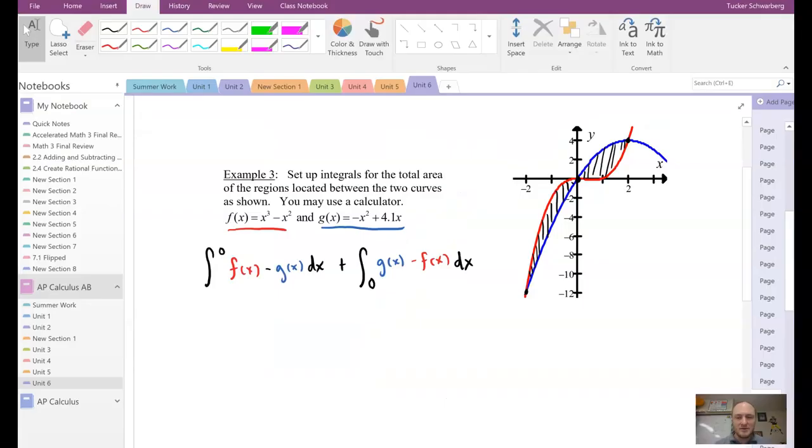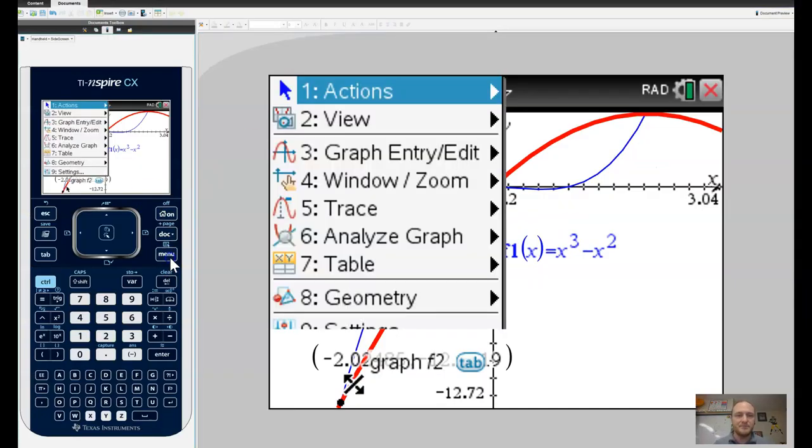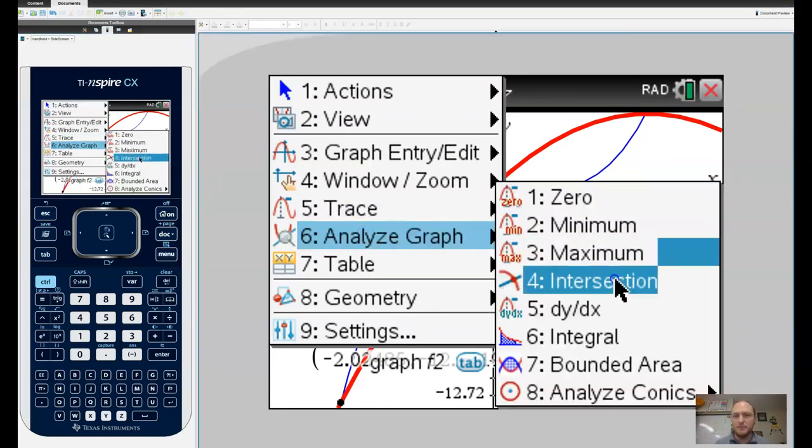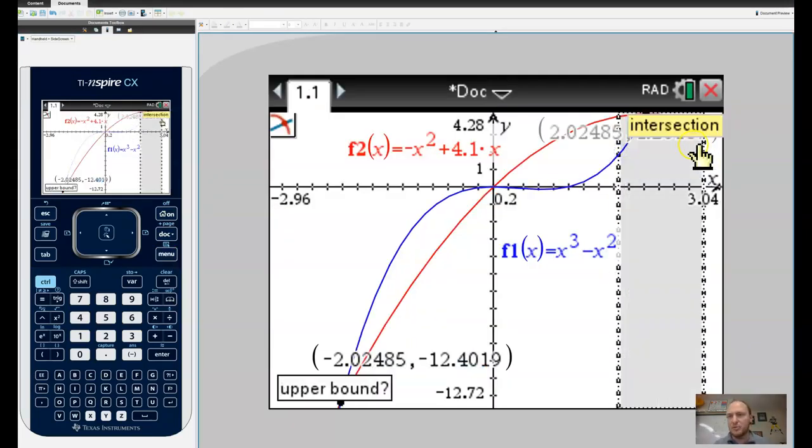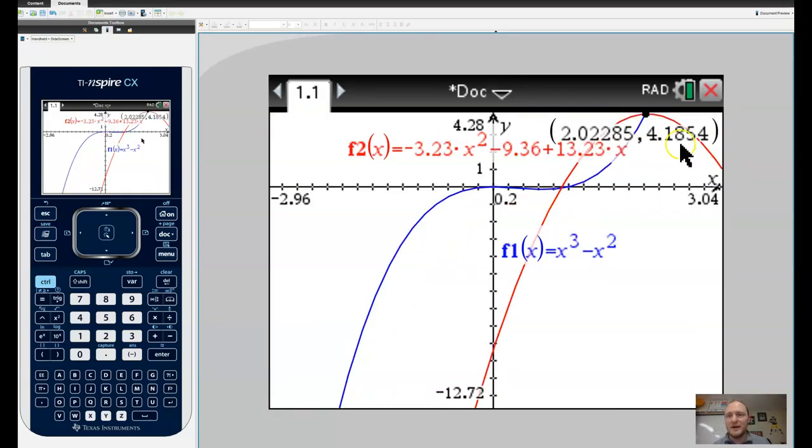Okay, and then here I get my values. So that's going to be -2.025, it looks like. So -2.025 will be the lower bound. And then we're going to do the same thing, we're going to analyze the function for the intersection of this point. And hey, look at that, 2.025 also.